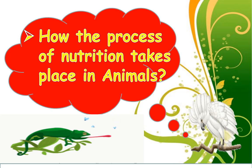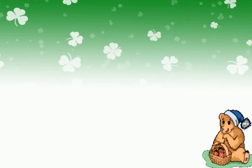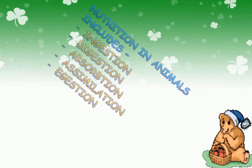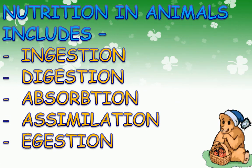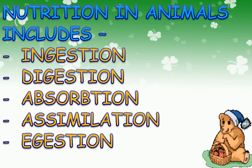Let's see. Nutrition in animals is a complex process which involves five steps: ingestion, digestion, absorption, assimilation, and egestion.